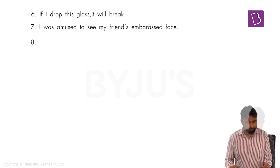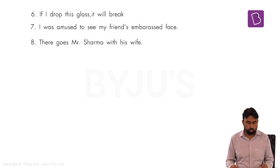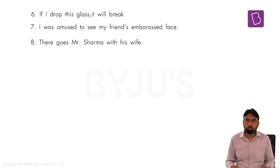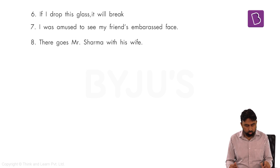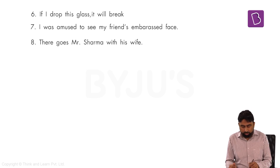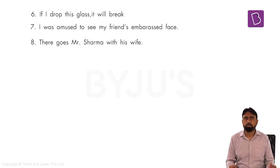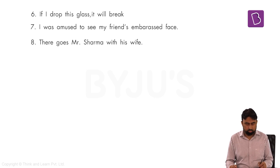Question 8: 'There ___ Mr. Sharma with his wife.' The subject is Mr. Sharma — a singular subject. 'There go Mr. Sharma with his wife' is incorrect because 'with his wife' doesn't make it plural — 'with' doesn't join subjects like 'and' does. 'Going' is an -ing form without a helping verb, so it's out. The correct option is 'goes': 'There goes Mr. Sharma with his wife' — since Mr. Sharma is a singular subject, the singular verb 'goes' is correct.